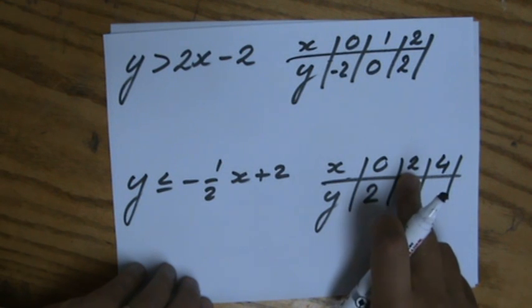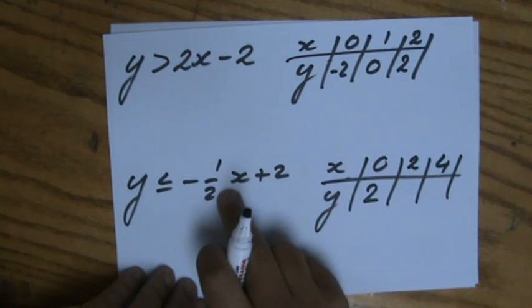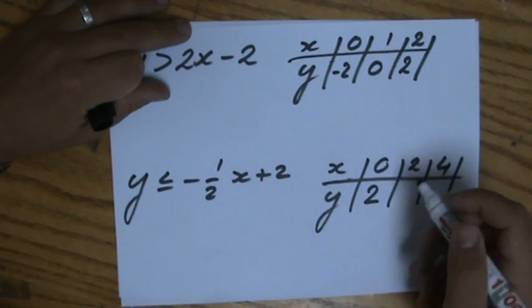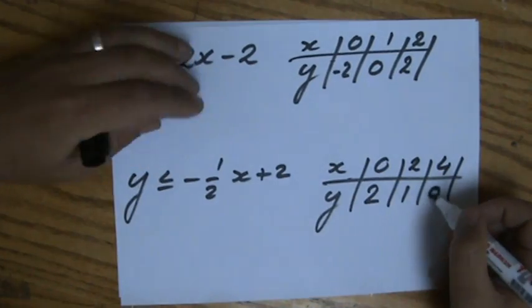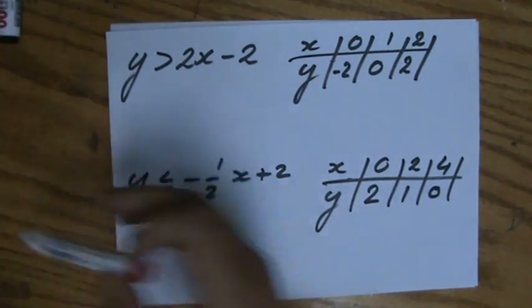I'll take 2 and 4. When x is 2, -½ times 2 is -1 plus 2 is 1. And 4 times -½ is -2 plus 2 is 0. Good, now I can check when I'm drawing the line if I made any silly mistakes.